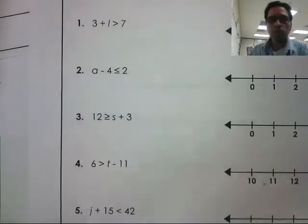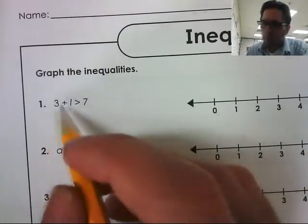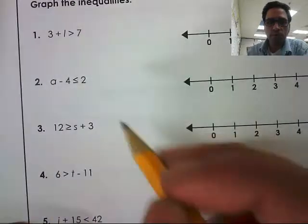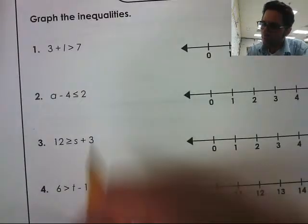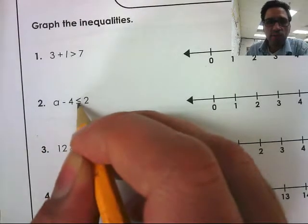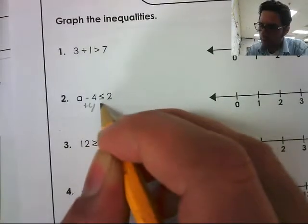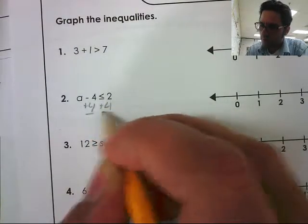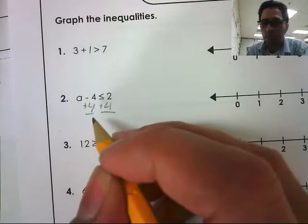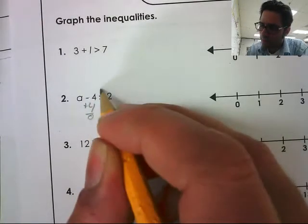On the back side was our homework, numbers 1 through 5. We did number 1 in class, so I'm going to do number 2. All right, a minus 4 is less than or equal to 2. We have to add 4 to both sides because we have to first isolate the variable. Negative 4 plus 4 gives us 0, so we are left with A on this side of the inequality.